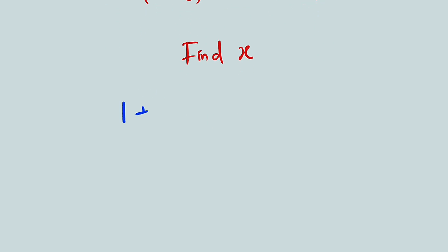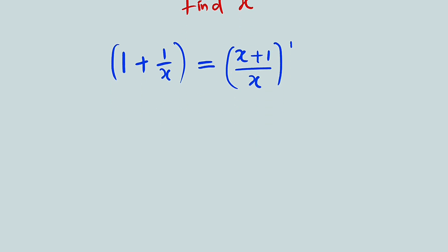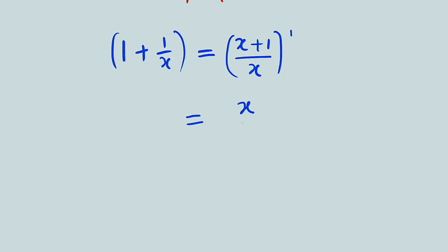So we have 1 plus 1 divided by x. To simplify this, we can take x and multiply by 1, giving us x, then add 1 to get x plus 1, then divide by x — giving us (x+1)/x. We can rewrite this with a negative exponent by taking the reciprocal: x divided by (x+1), raised to the power of negative 1. They mean the same thing — these two are equivalent.